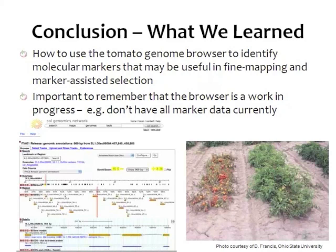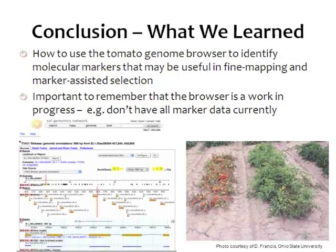In conclusion, we learned how to use the Tomato Genome Browser to identify molecular markers that might be useful in fine mapping and marker-assisted selection. One important thing to remember is that the browser is always a work in progress — as new sequence information is generated, it will be incorporated into the Genome Browser. It's important to understand the structure of the browser so that when things change, it's not overwhelming, and you can still get your basic orientation from elements like the scales, which are not going to change.